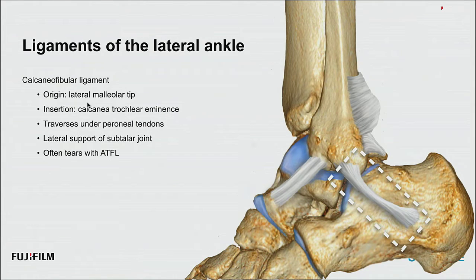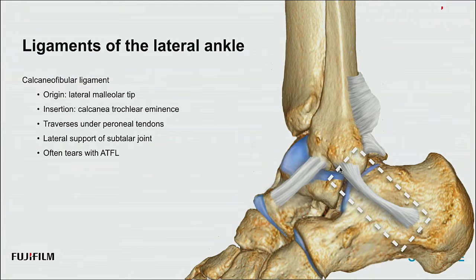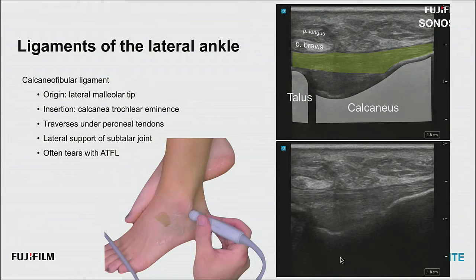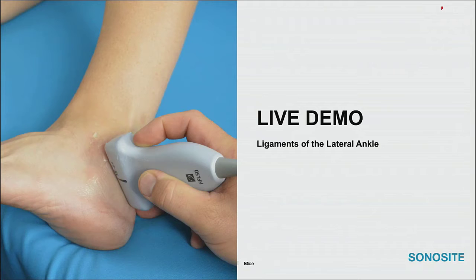The CFL is the most practical of the lateral ankle ligaments and sits right in our lighthouse view with the peroneal tendons. The probe orientation is slightly oblique on the superior surface of the calcaneus. We should see this ligament supporting the peroneus brevis and longus tendons right over the posterior lateral subtalar joint. The CFL often tears together with the ATFL.